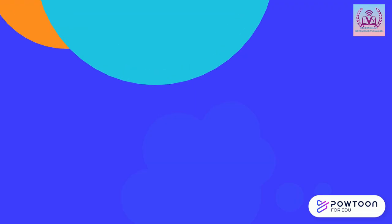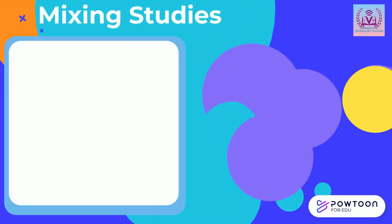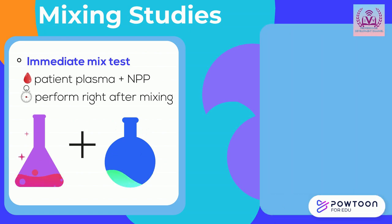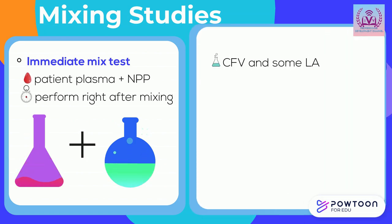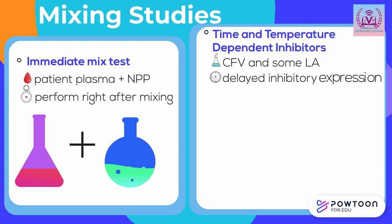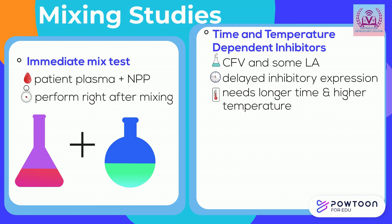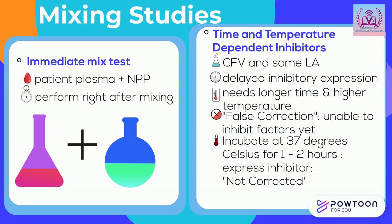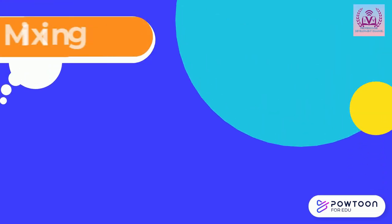Examples of these inhibitors include heparin, lupus anticoagulants, and specific factor inhibitors. In this case there is no need to perform the other substitution tests. Mixing studies are usually performed as an immediate mixed test — the patient plasma is mixed with NPP and the test is performed immediately. However, some inhibitors like factor 8 inhibitors and some lupus anticoagulants are time and temperature dependent; their inhibitory effects only become fully expressed after some time at temperatures higher than ambient room temperature. Thus, another mixing study should be performed with incubation at 37°C for one to two hours to fully express the inhibitor and show a non-correction.